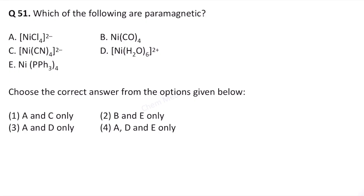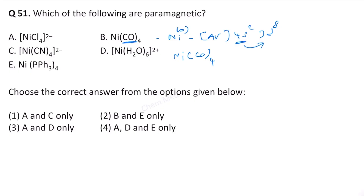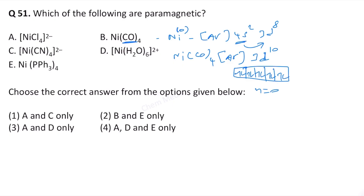For complex B, tetracarbonyl nickel: the oxidation state of nickel is 0 because carbonyl is a neutral ligand. The configuration is argon, 4s², 3d⁸. However, when the ligands form a complex, the 4s² electrons jump to the 3d orbitals, making it 3d¹⁰, because carbonyl is a strong field ligand. So there are no unpaired electrons (n = 0). The hybridization is sp³, and complex B is diamagnetic.